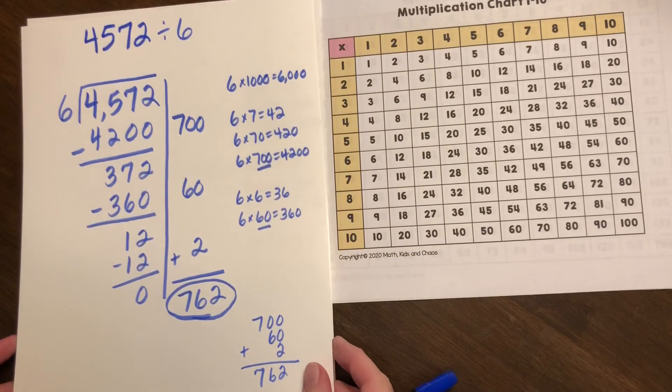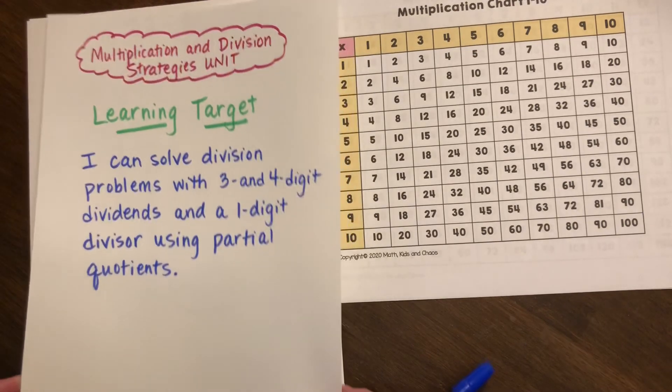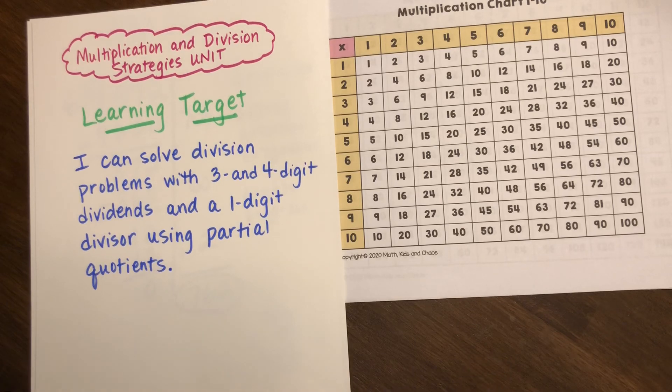So as you are working today you will be dividing numbers that have three or four digit dividends, you'll be using a one digit divisor and you will be using this partial products method. As you are working on your own, if you need extra support please watch the video again and stop and re-watch as needed, and if you still need support please reach out to your teacher.